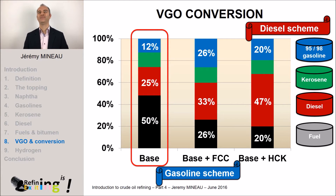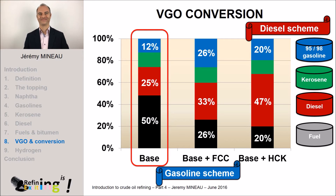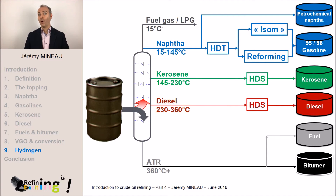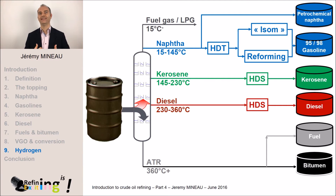Before concluding, I would like to speak about hydrogen in the refinery — it is in fact a very important molecule. We need hydrogen for the several hydro-treatments to remove the sulfur. But where does this hydrogen come from? If you remember the second video, we explained that reforming reactions produce hydrogen, because we dehydrogenate naphthenes into aromatics. This hydrogen is used to feed the hydro-treatments.